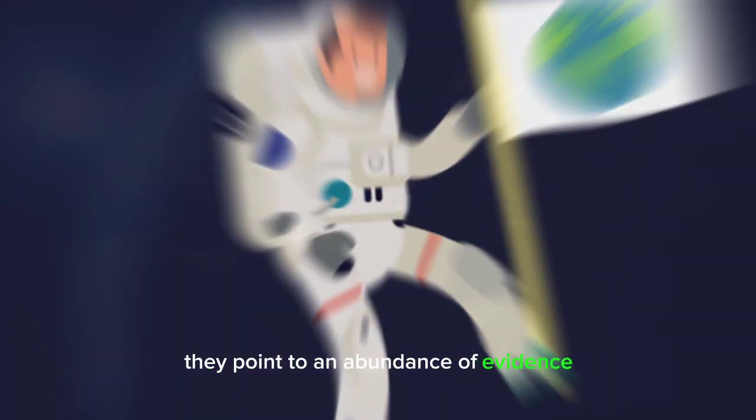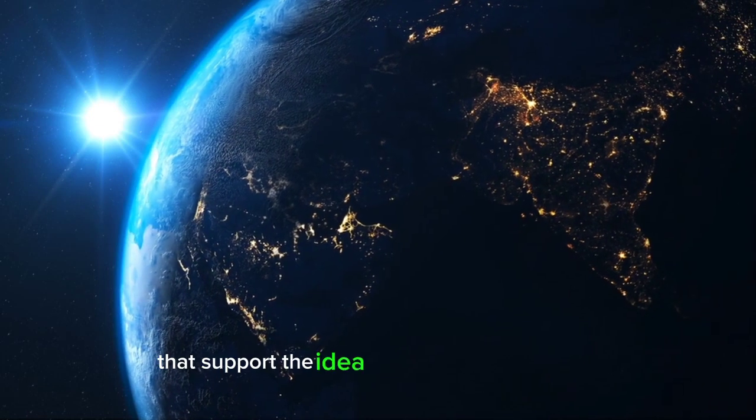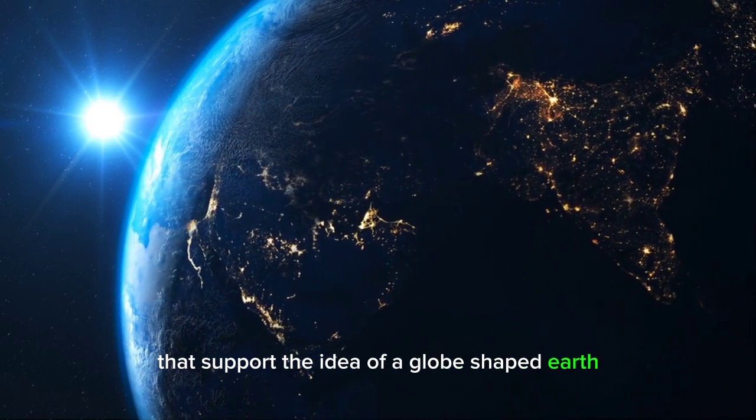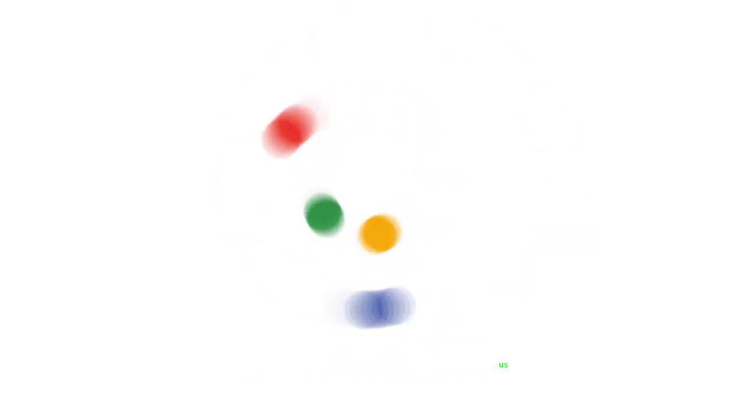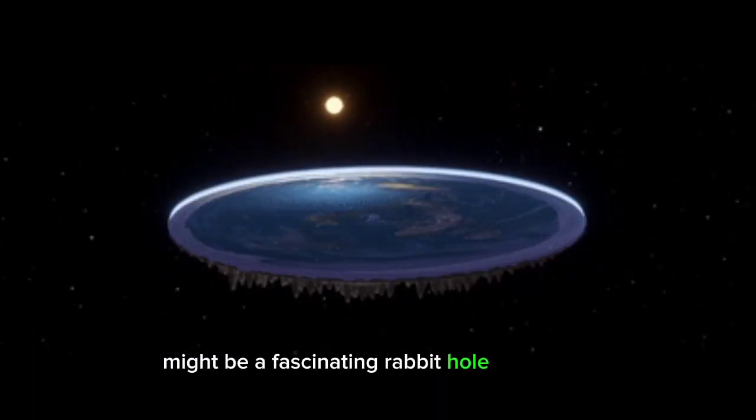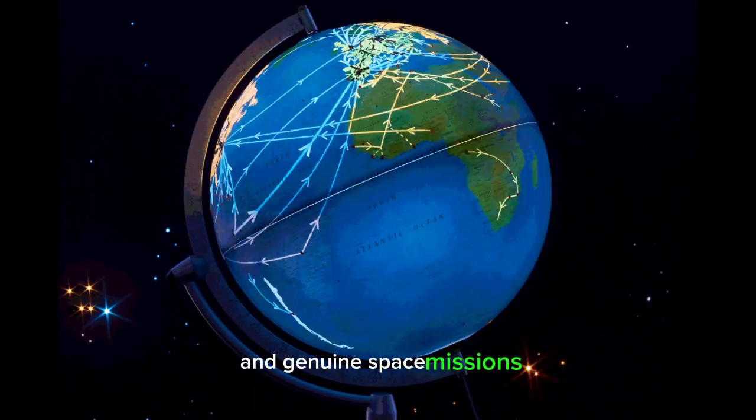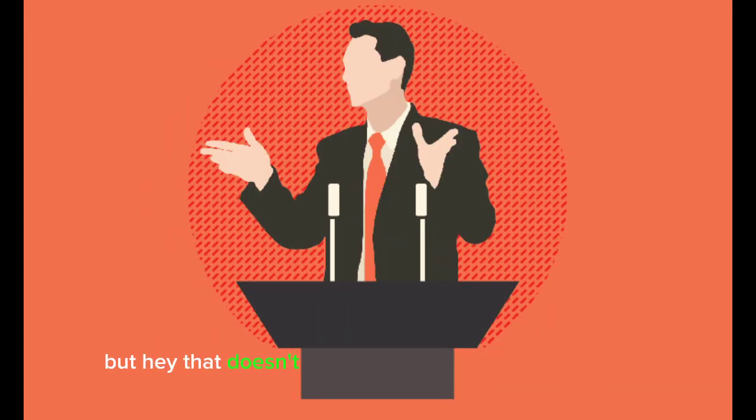They point to an abundance of evidence, from satellite imagery to gravitational theories, that support the idea of a globe-shaped Earth. So where does that leave us? As much as the flat earth theory might be a fascinating rabbit hole to explore, the preponderance of evidence still firmly supports the concept of a round Earth and genuine space missions. But hey, that doesn't mean we can't continue to question, investigate, and seek the truth in all things.